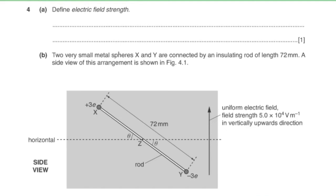Question four, part a: define electric field strength. Electric field strength is force per unit positive charge, or it can also be expressed as voltage divided by distance between plates.